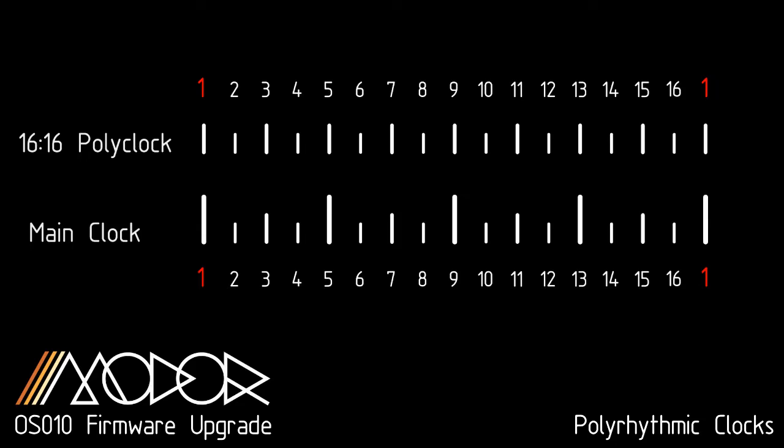A polyrhythmic clock is a clock that can alternatively control the step sequencer for a certain instrument. It has a certain speed ratio compared to the main clock. A 16 over 16 polyrhythmic clock is identical to the main clock — nothing special.